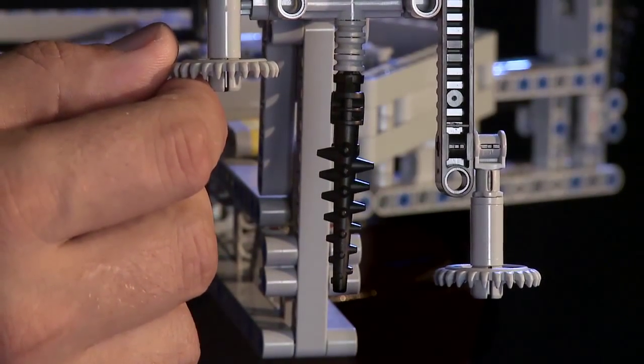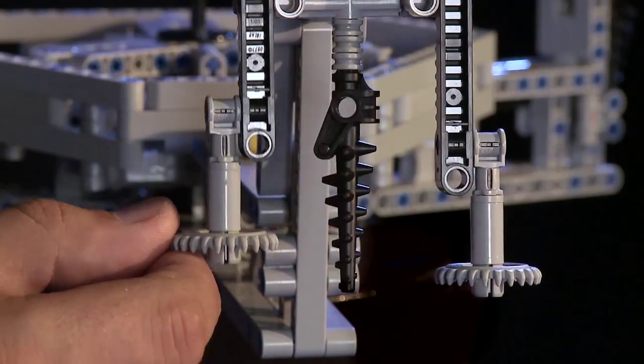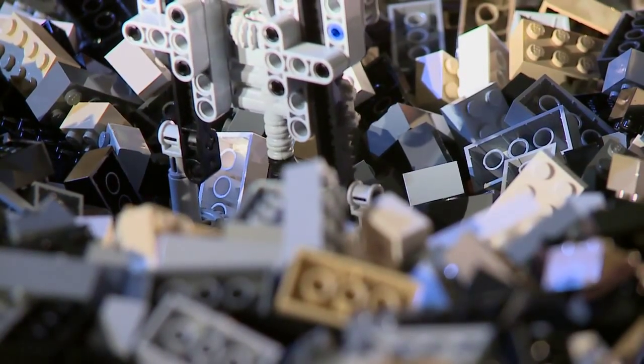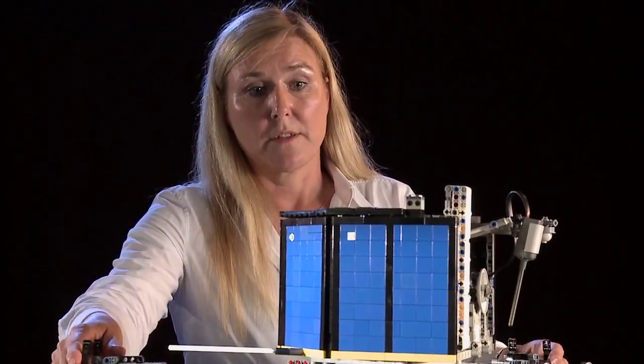In addition to this fixation, in the foot itself there is a so-called ice screw, which uses the landing energy to screw into the surface and therefore is an additional fixation. On top of that, if all these means are not working at all, we can use our so-called cold gas system.